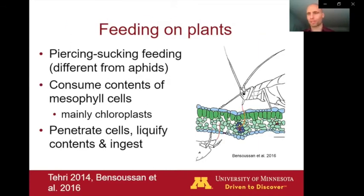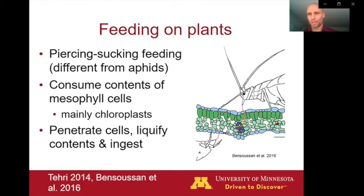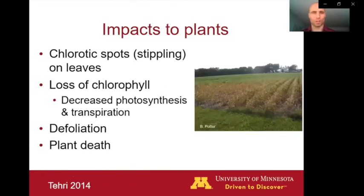Spider mites are piercing, sucking feeders, but they do so in a way that's different from soybean aphids. Soybean aphids tap into the plumbing of the plants, sucking the sap from the phloem. Spider mites are inserting their mouth parts into the leaves and actually destroying cells and sucking out the contents — so they're not sap suckers like soybean aphids, they're destroying cells and sucking up the contents. That's why mites can be so destructive: as they're damaging those cells, they're causing irreversible damage or injury to that leaf tissue, which can result in stippling — these small chlorotic spots — which can lead to loss of chlorophyll, decreased photosynthesis, leaf loss on the plants, and eventually under heavy infestations, we can get plant death.